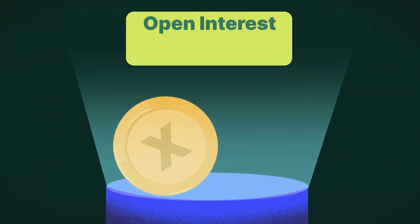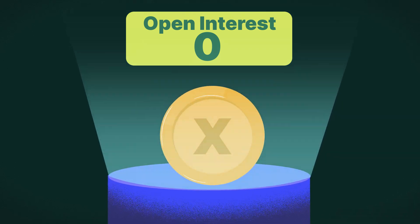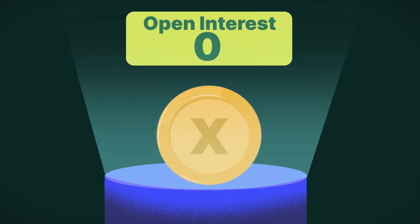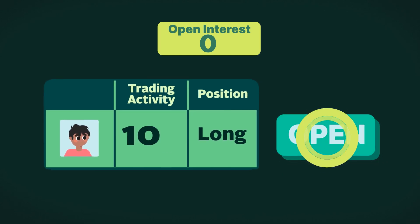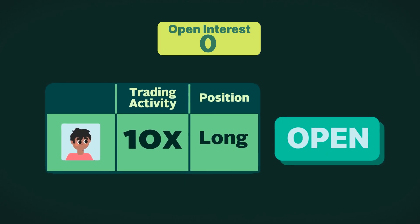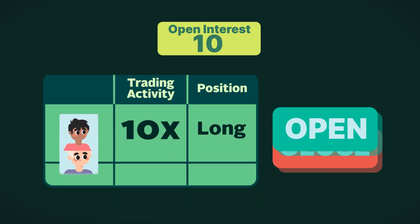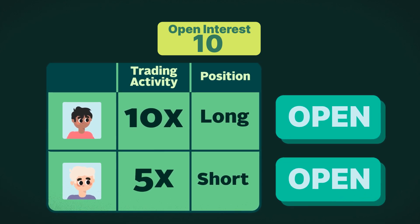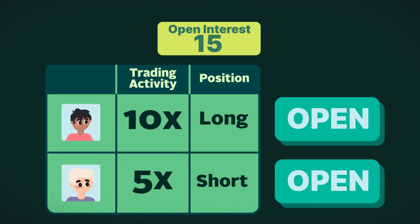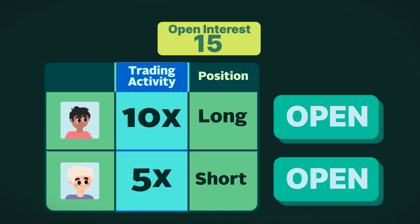For example, let's imagine that the open interest of X coin is zero, meaning there are no active positions for this market. Sam then enters a long position with the size of 10 X coins, so the open interest is now 10X. Barry is bearish on X and decides to short 5X, bringing the open interest to 15X, because open interest counts the amount of open positions held by traders regardless of their bias.